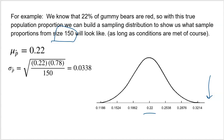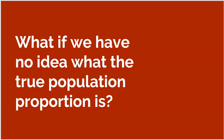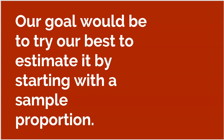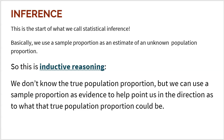The real question of the day is: what if we have no idea what the true population proportion is? Every example so far, we knew what the truth was and looked for evidence to support it. What if we don't know what that true population proportion is? Our goal would be to estimate it by starting with the sample proportion. Even though we don't know the true P, maybe we could take a sample to guide us in the right direction. This is literally the beginning of inference — we use a sample proportion as an estimate of an unknown population proportion, and this is where we start to think with inductive reasoning.